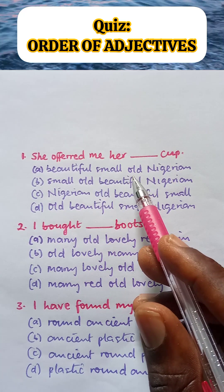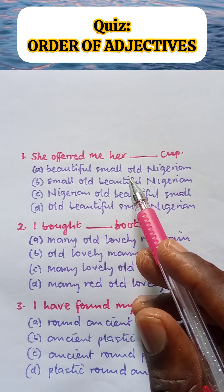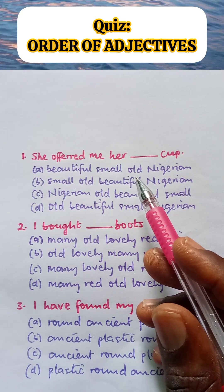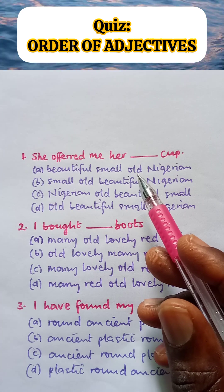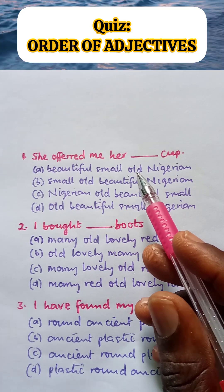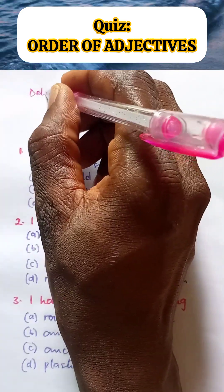The order of adjectives. These words are adjectives. How do we arrange them? Here is the order of arrangement of adjectives.